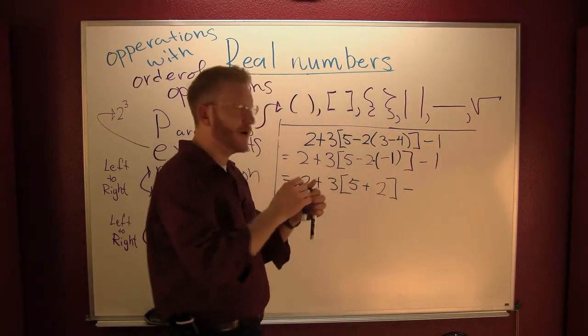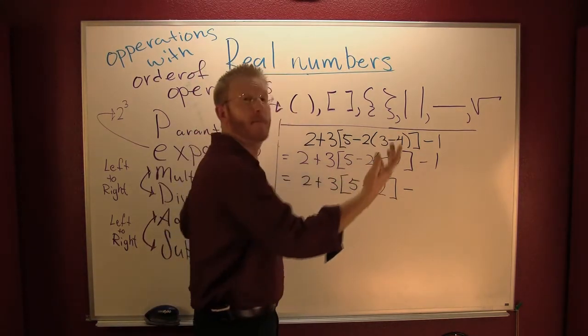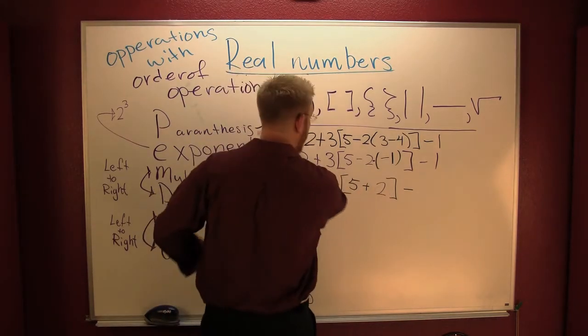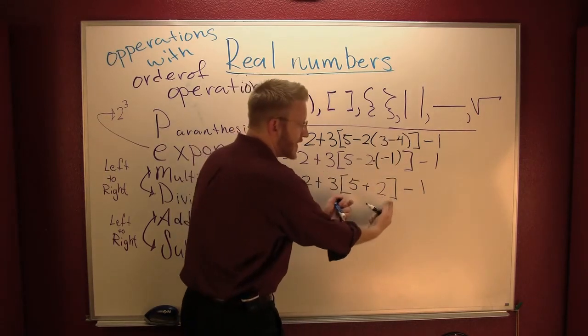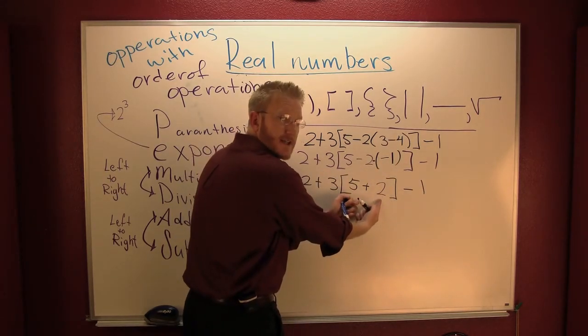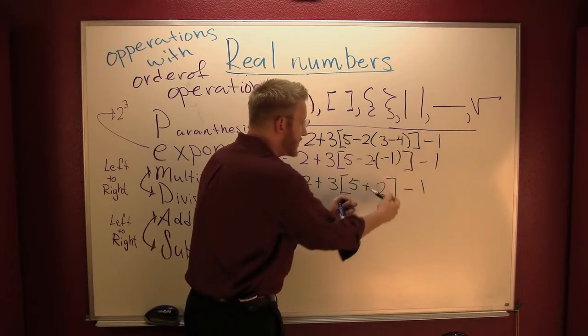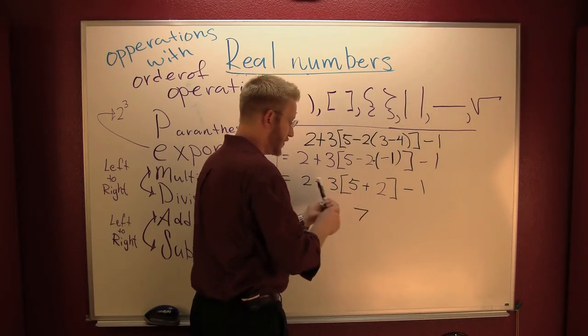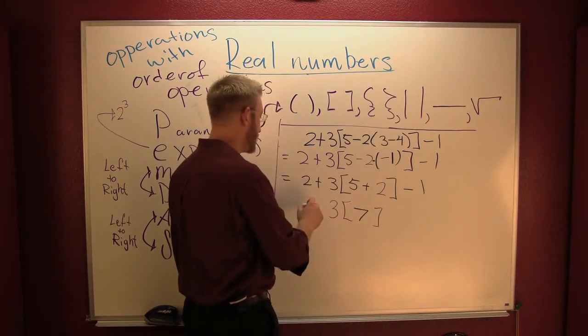So now I exercise my order of operations. Only one thing changed from here to here, my multiplication. So now do I have any parentheses? Yes! So I go inside those parentheses. Is there anything I can do inside those parentheses? Looks like I have some addition. What's five and two? Seven! Sure!